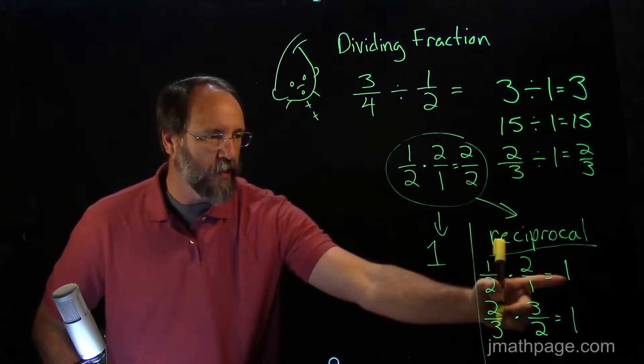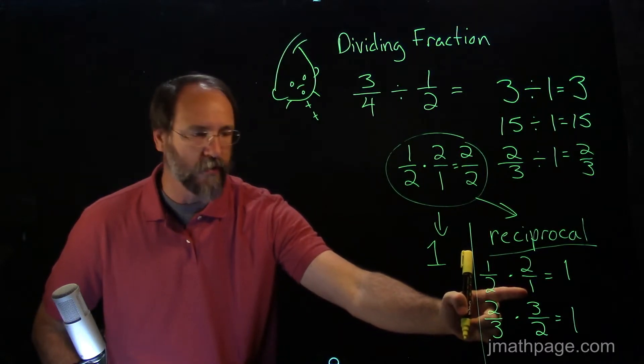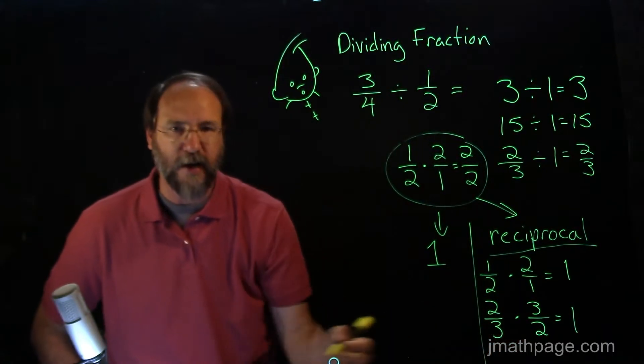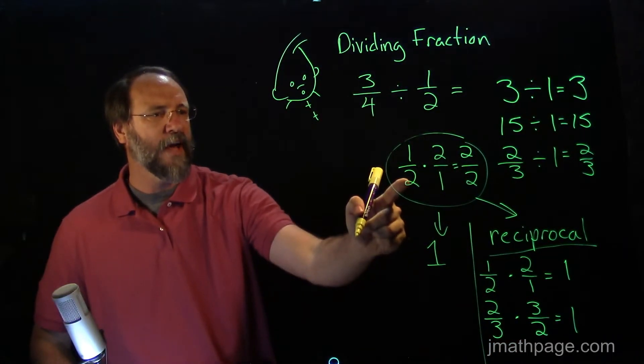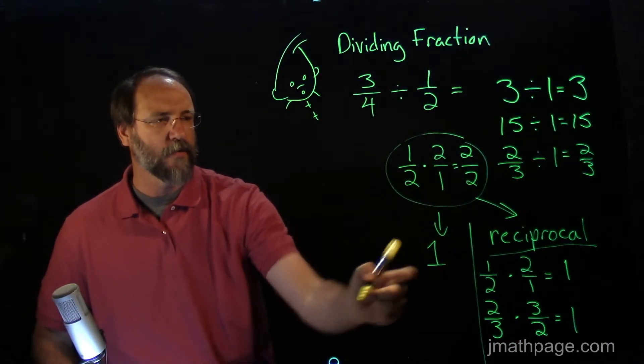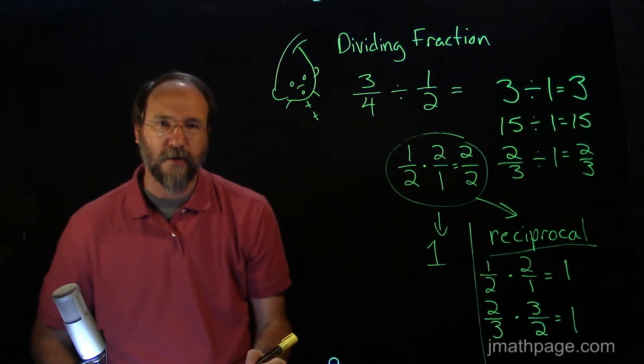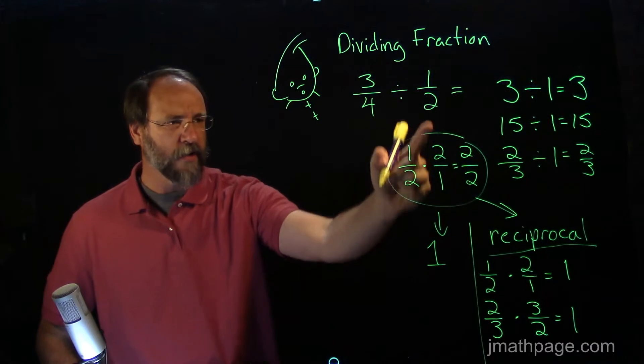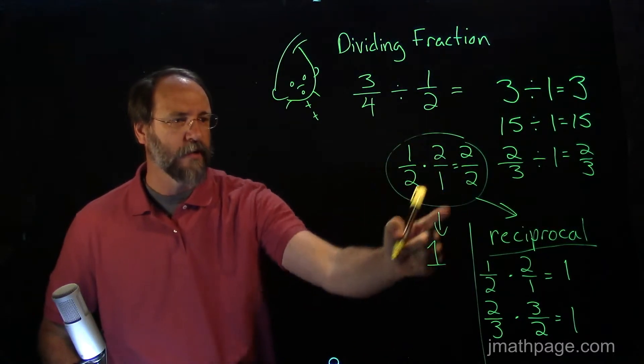So one-half to become one needs to have its reciprocal, two over one. Two-thirds to become one needs to use its reciprocal, three-halves. So I used one-half's reciprocal here to make the whole number one. So far, so good.